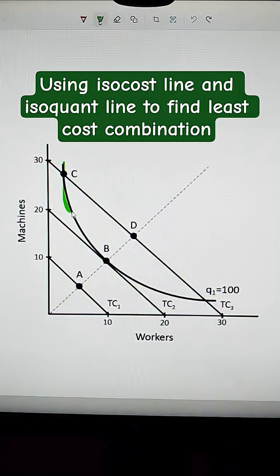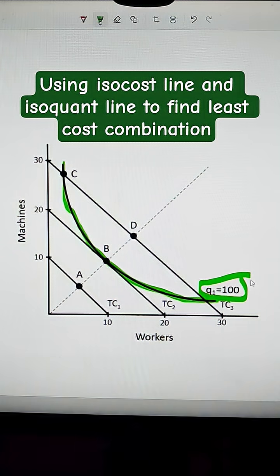This curved line is an isoquant line. It shows us all the different possible combinations of inputs, in this case workers and machines, that we could use to make 100 units of, in this case, furniture.